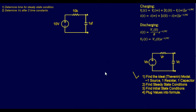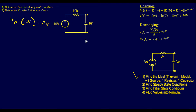Step two: find the steady state conditions. Steady state means the circuit has been on for a very long time — more than five time constants. When the capacitor is fully charged it acts as an open, meaning there is no current flowing and the full 10 volts from the power supply appears across points A and B. So the steady state condition is VC at infinite time equals 10 volts.